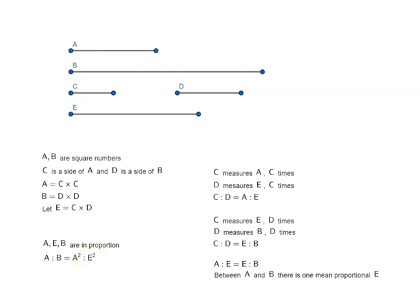But we know that A is to E is equal to C is to D. So which means we can say A is to B is equal to the duplicate ratio of the sides.